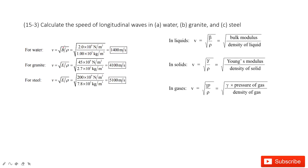Now we talk about the speed of the longitudinal waves decided by the materials in the textbook. In three materials — water, granite, and steel — how can we find the velocity or the speed?